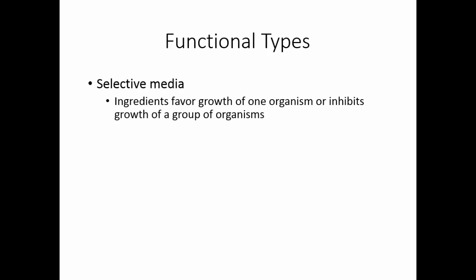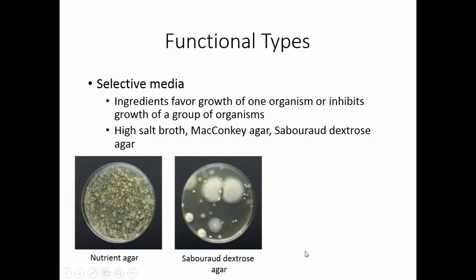Selective media has some ingredient that favors the growth of one organism or inhibits the growth of a group of organisms. High salt broth, MacConkey agar, and Sabouraud dextrose agar are some examples. Sabouraud dextrose agar is selective — it has a very low pH and a very high sugar content which discourages the growth of bacteria, so it selects for fungus.